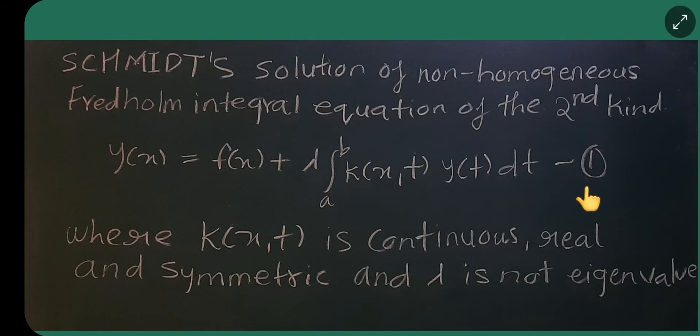Consider that this has equation 1. Where k of x, t is continuous, this kernel is continuous, real and symmetric. And lambda is non-eigenvalue. This you will have to remember.